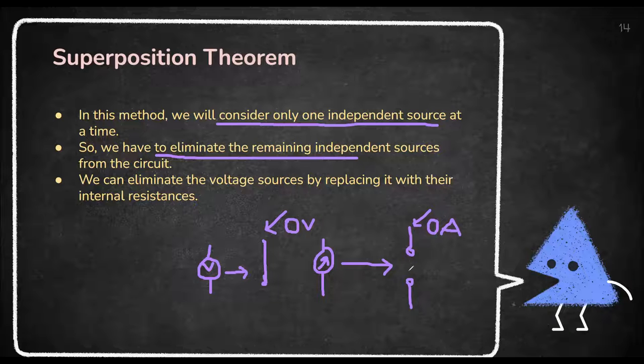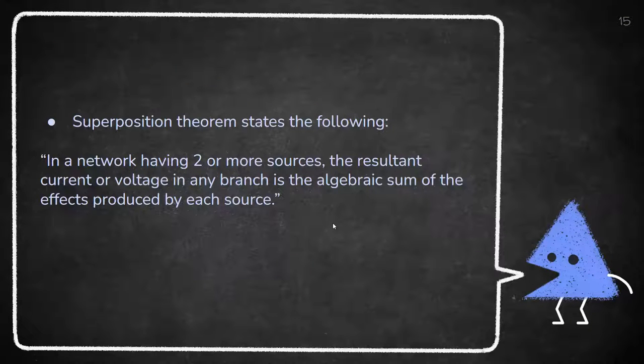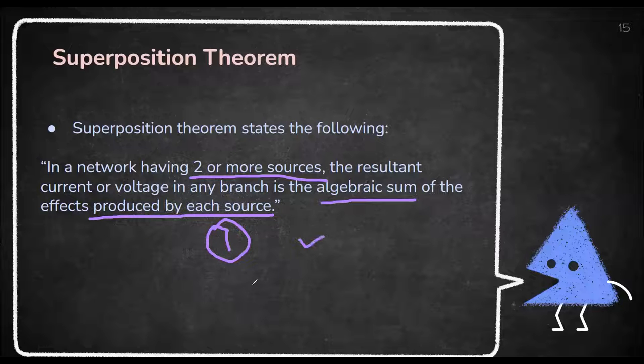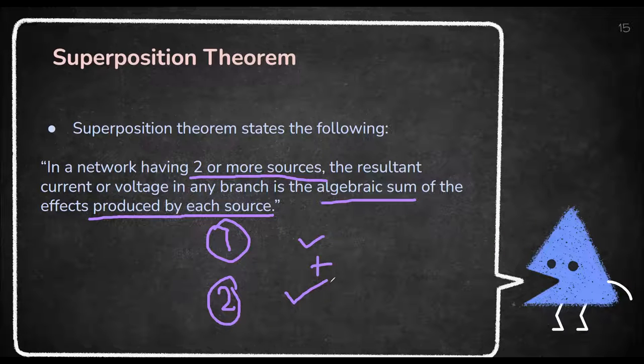We have to eliminate the remaining independent sources from the circuit. We can eliminate voltage sources by replacing it with their internal resistances. If it is a voltage source, we replace it by a short circuit, a straight line, a simple wire. If it is a current source, we replace it in open circuit. This indicates zero voltage. And this indicates zero current, zero ampere.